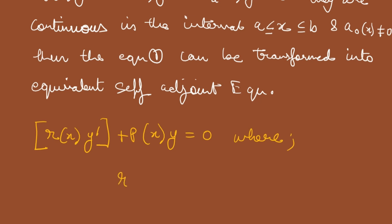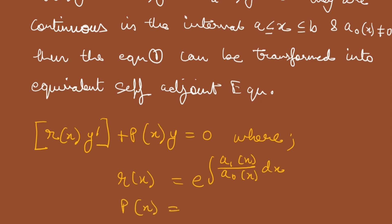Where r(x) is given as e to the power of the integral of a1(x)/a0(x) dx, and p(x) is equal to a2(x)/a0(x) · r(x).